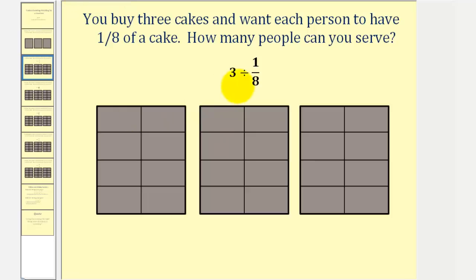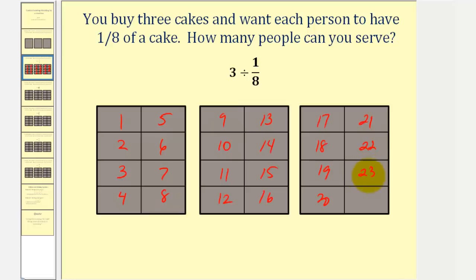Each piece represents a serving, meaning each cake will have eight servings. So there are 24 servings, and therefore three divided by one-eighth equals 24. There are 24 one-eighths in three.